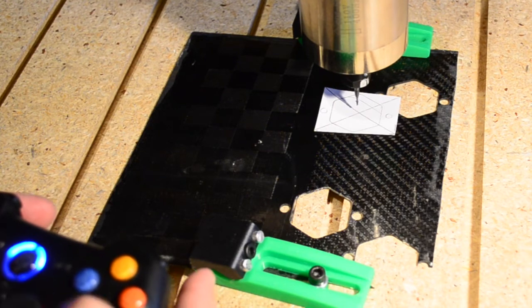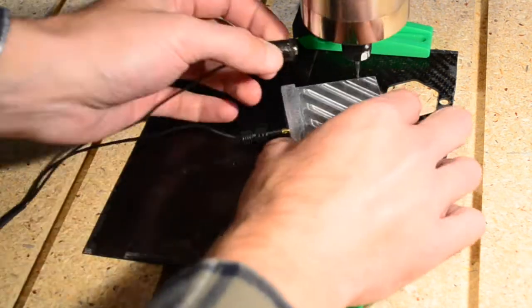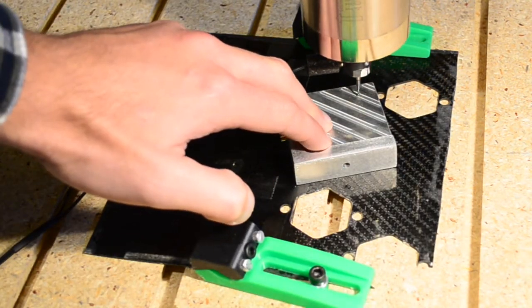I can zero my X and Y axes to the center of the paper and then use the probe to set the Z zero to the top of the stock.